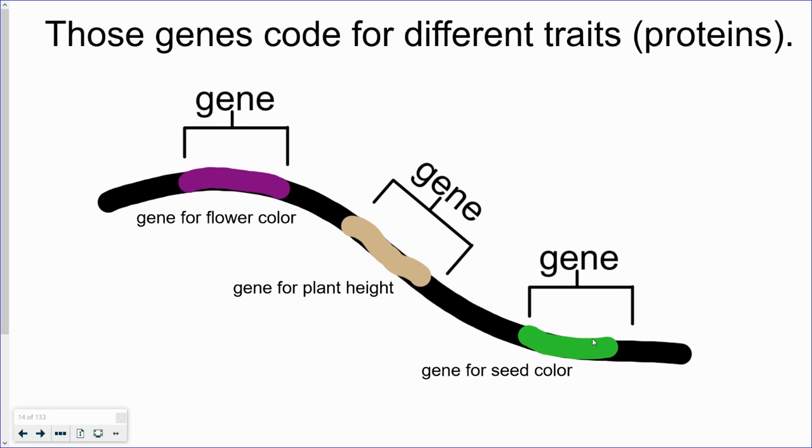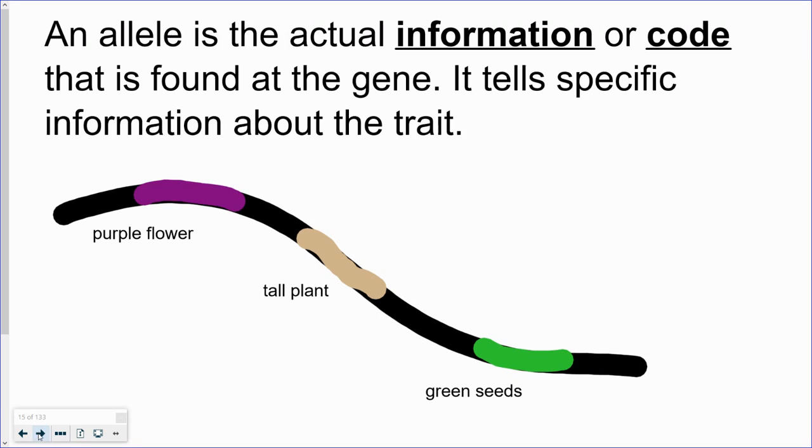Now, new word: an allele is the actual information or DNA code that's found right here on the gene. The other day I asked you to read strands of DNA and figure out what their complementary bases are, okay? So you were learning a little bit about the DNA code.